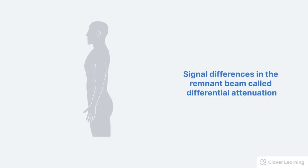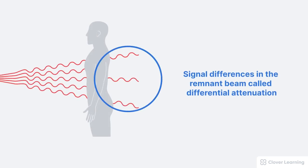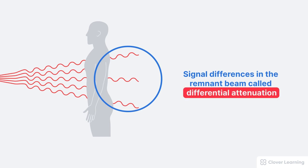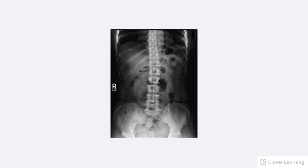To understand how these procedural factors influence image contrast, we need to understand how image contrast is created. Image contrast exists because of the signal difference in the remnant beam. We call this differential attenuation. Basically, different body structures attenuate the beam at different levels.